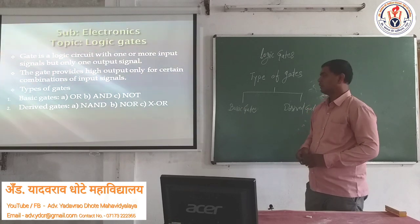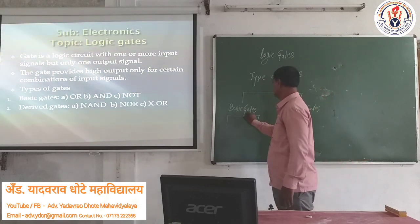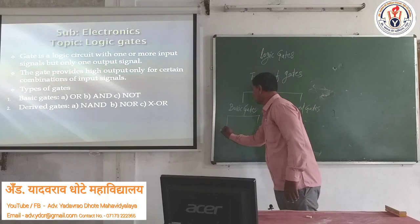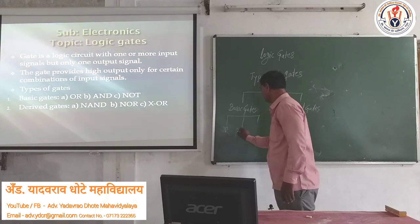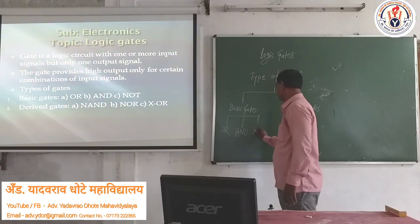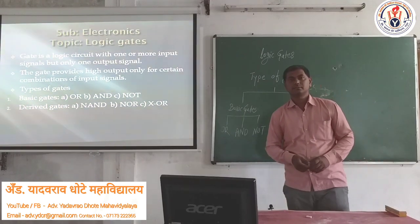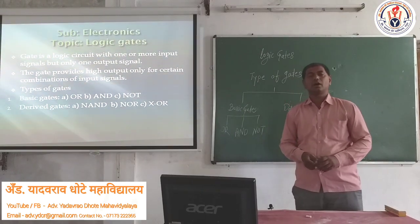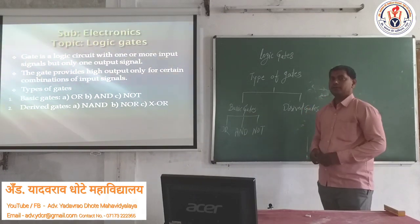The basic gate is of another type. There is the OR gate, the second is the AND gate, and the third is the NOT gate. In basic gates, there are three gates: first is OR, second is AND, third is NOT gate.